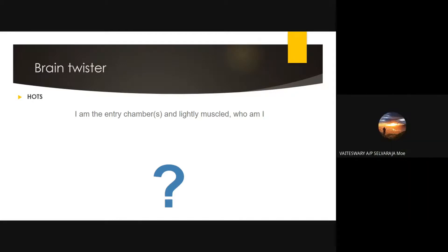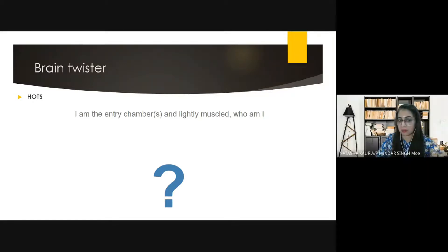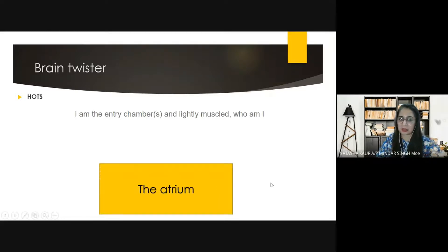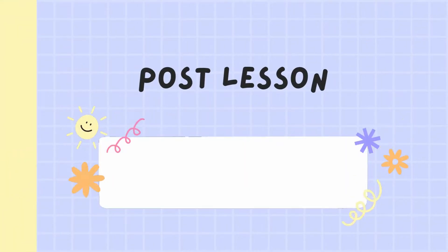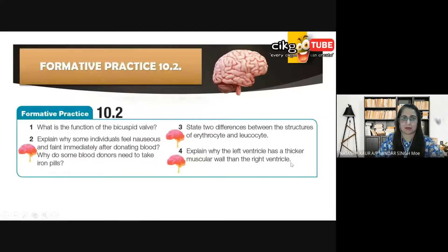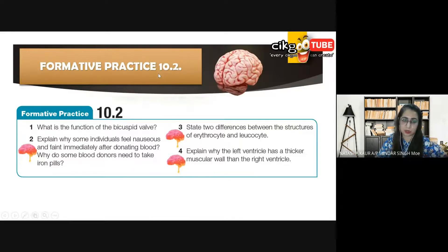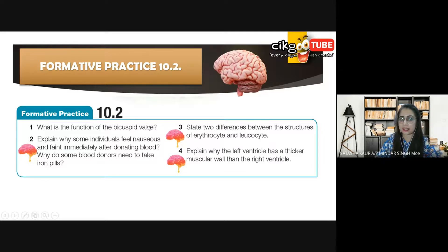Which chamber is the entry chamber that is lightly muscled? The right atrium. Yes, the atria are lightly muscled, so this is the right atrium. We are done, so you have to do formative practice 10.2, but let's discuss the questions here first.